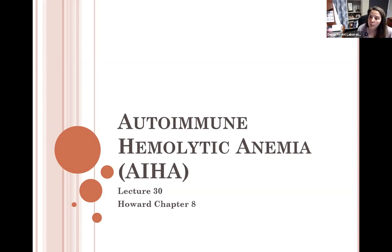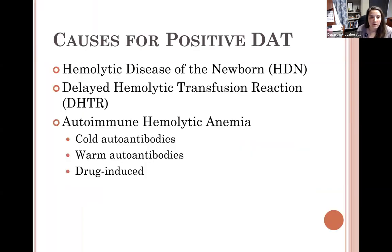Remember, the key word is hemolytic anemia — the anemia present will be normochromic normocytic. With autoimmune hemolytic anemia, blood bank can always detect it using the DAT. If you have a positive DAT, that indicates your patient's red cells are coated with something, whether that be an antibody or complement.